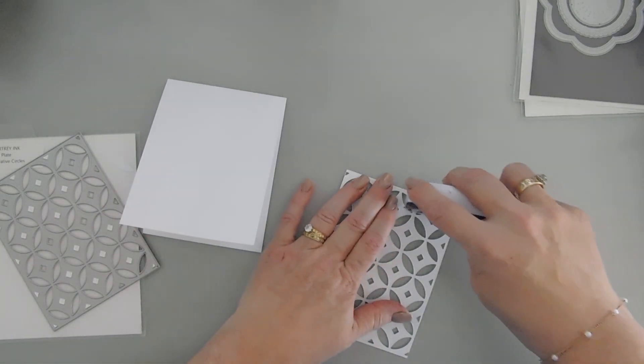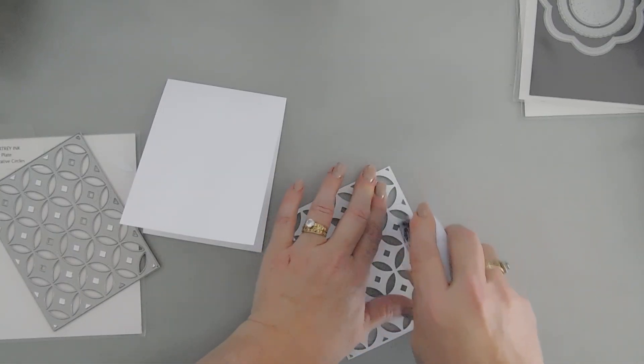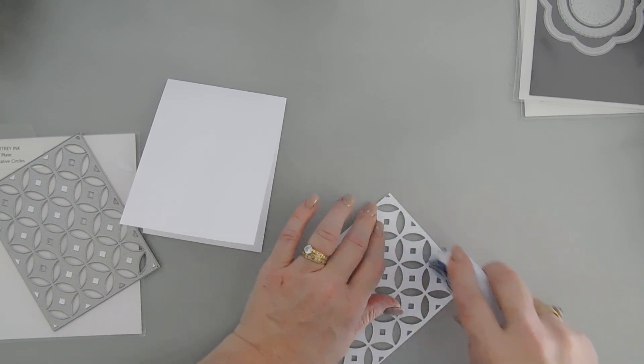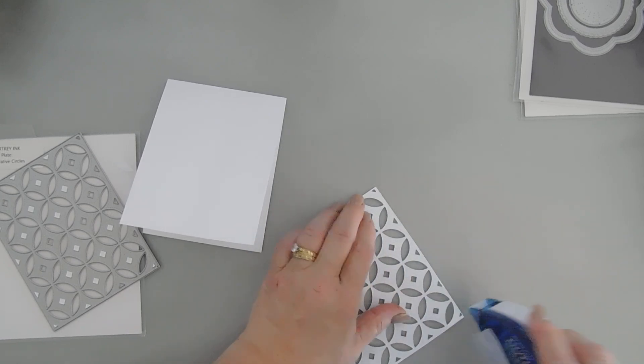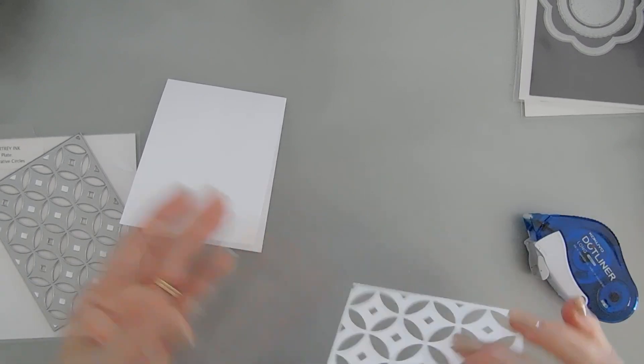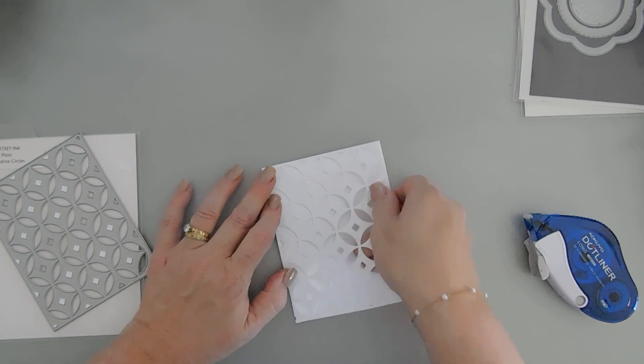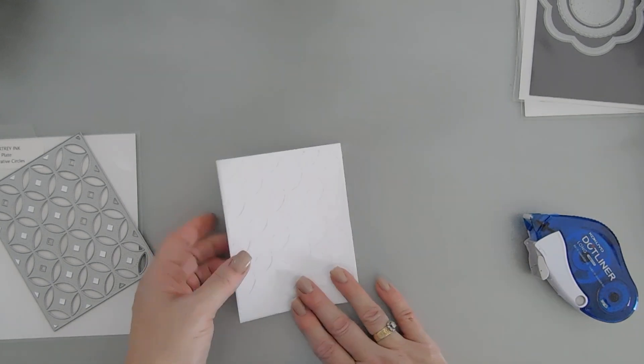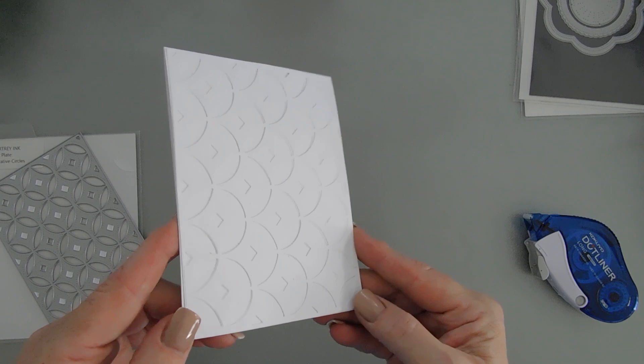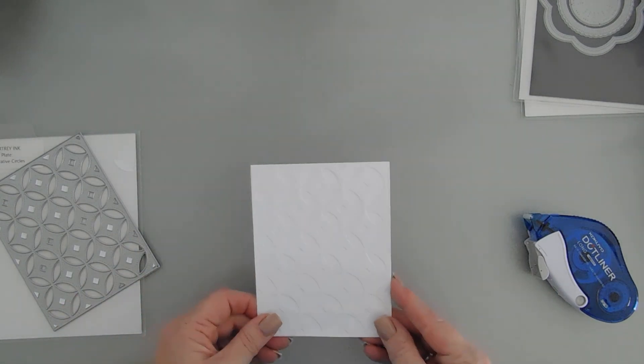I'm going to flip it around and just using my tape runner, I'm going to go along the edges. You can use glue if you wanted to. I think we're going to adhere this to the front of our card base. Wonderful. Okay, so our background is done.